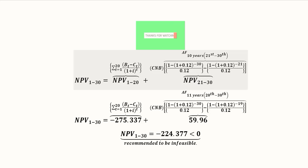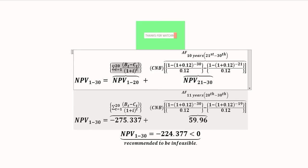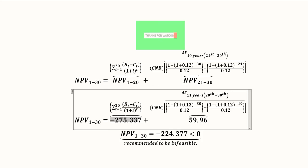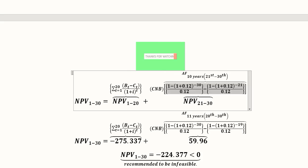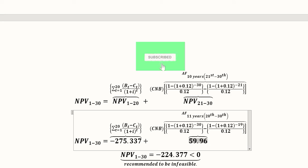Now we use this to find the NPV in a convenient way. The NPV for the first 20 years, where net benefits are different, uses the standard NPV formula we have already learned; the answer is found and approximately calculated. The other part is for the common or constant net benefits — those common net benefits are multiplied by the annuity factor for the 21st through 30th year. Putting in the values, the product is 59.96, which is the product of the common net benefit (C and B) with the annuity factor.